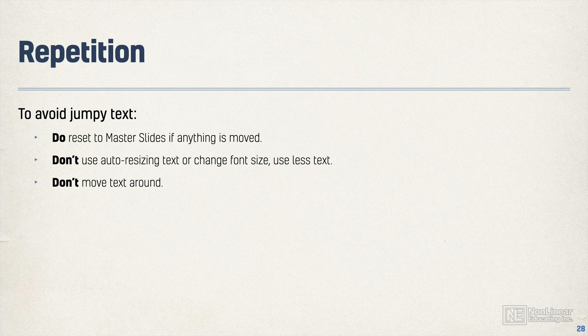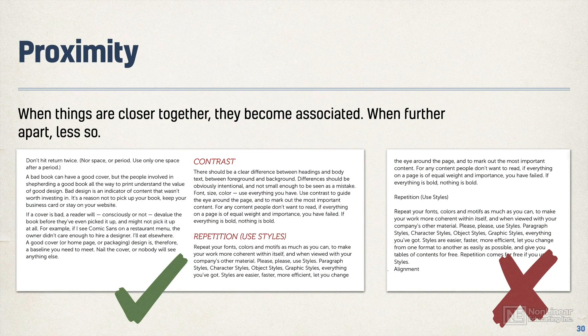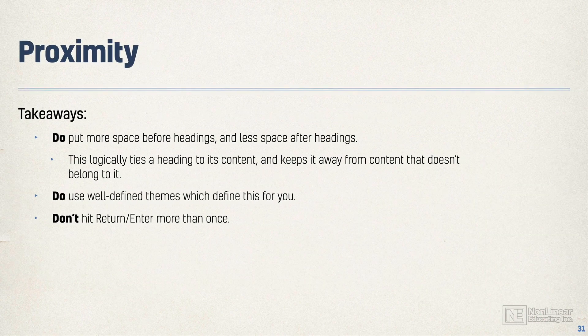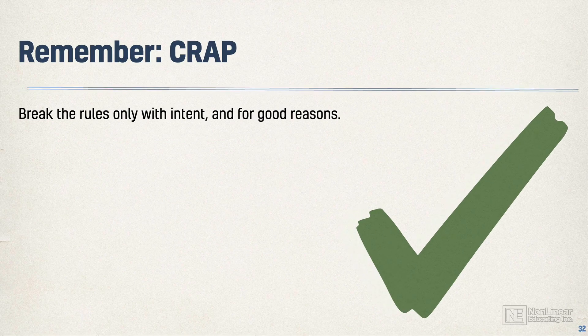Reset to your masters and make sure everything is as consistent as possible. Don't auto-resize text if at all possible. Alignment is important — use the margins, leave things where they should be, and don't center things except occasionally, not as a rule. Proximity: how close is something to something else? The simplest way to remember this — headings need more space before them and less space afterwards to tie them to their content. Make sure the themes are putting space in for you. The rules are CRAP: Contrast, Repetition, Alignment, and Proximity.